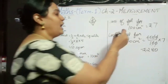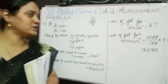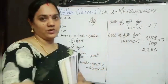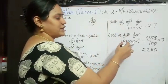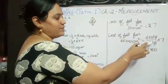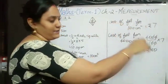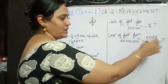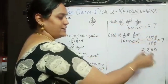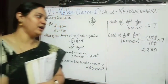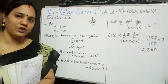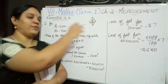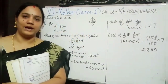100 square centimetre costs rupees 7. We need the cost for 4000 square centimetre. So 4000 divided by 100 into 7 — cancelling zeros, balance is 40 into 7, which equals 280. So the cost of foil for covering 400 sweets is rupees 280.